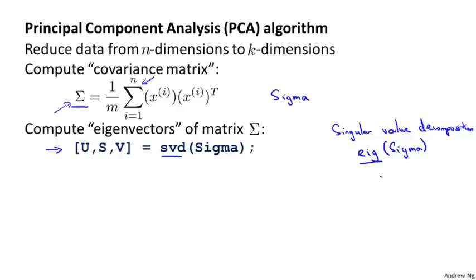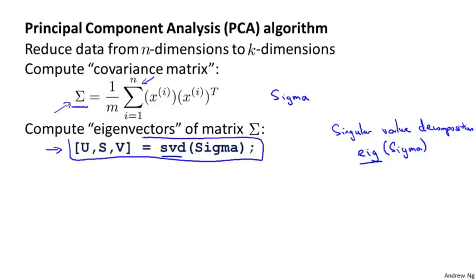The covariance matrix always satisfies a mathematical property called symmetric positive semi-definite — you really don't need to know what that means. The SVD and eig functions are different functions, but when applied to a covariance matrix they'll always give you the same thing. All you need to know is this is the command you should implement in Octave. If you're implementing this in a different language, find the numerical linear algebra library that can compute the SVD or singular value decomposition — there are many such libraries for probably all major programming languages — and use that to find the matrices U, S, and V given the covariance matrix sigma.